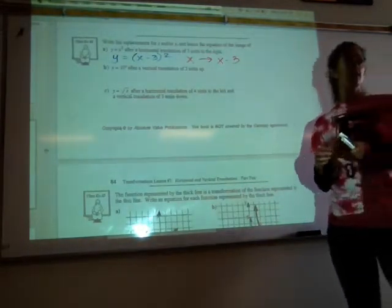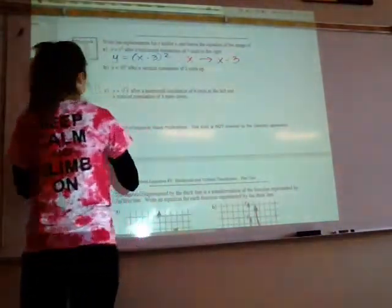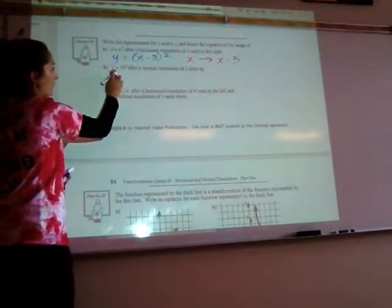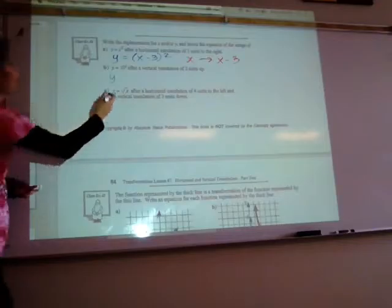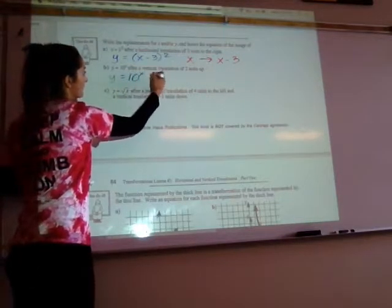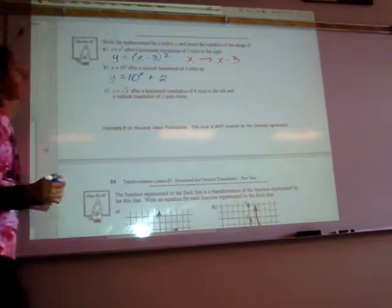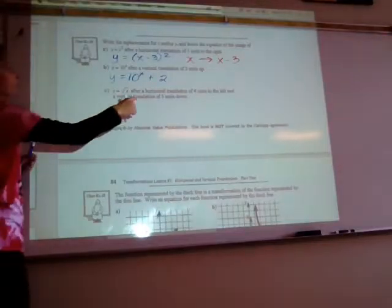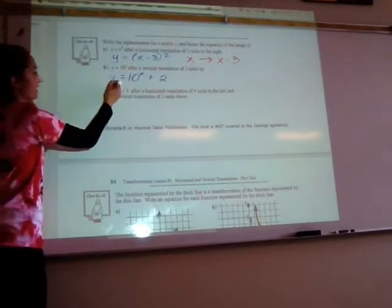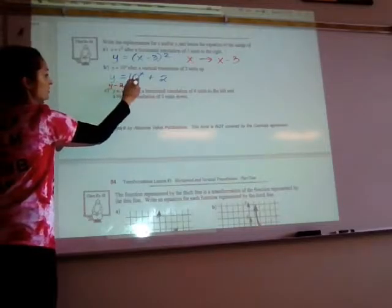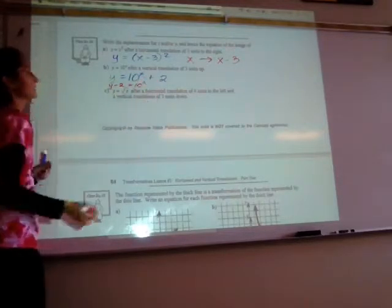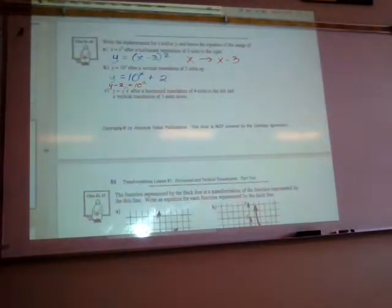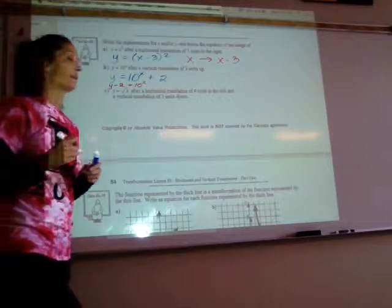Vertical translation, two units up. So we're going to start with y equals 10 to the power of x. And our new equation will be y equals 10 to the power of x, all plus 2. If I were to move this 2 to the left-hand side, I would get y minus 2 equals 10 to the power of x. So what was y replaced with? y minus 2. Y minus 2, okay.